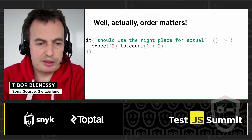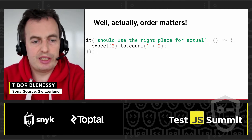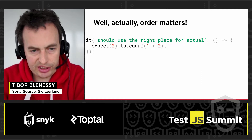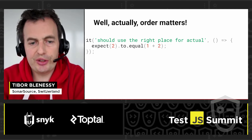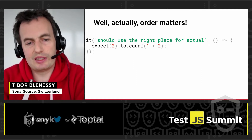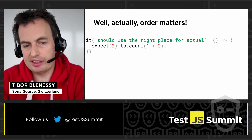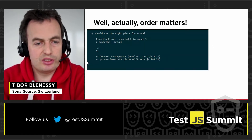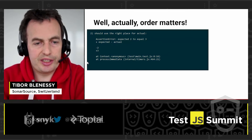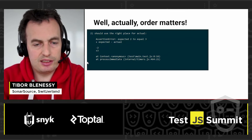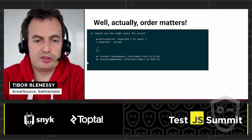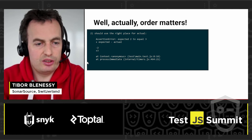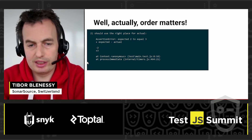To the expect call, you should provide the result of the computation, and when you invoke an assertion like equal, it should be the expected value. If you swap it around, you will receive a message like this: 'expected is two and it's supposed to equal three,' which is wrong and it might be confusing.